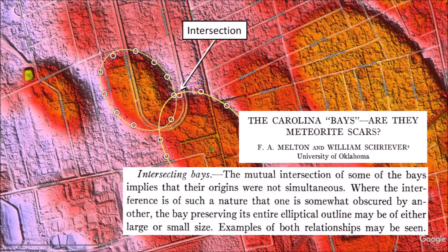Their paper was titled 'The Carolina Bays — Are They Meteorite Scars?' They wrote this about intersecting bays: 'The mutual intersection of some of the bays implies that their origins were not simultaneous. Where the interference is of such a nature that one is somewhat obscured by another, the bay preserving its entire elliptical outline may be of either large or small size. Examples of both relationships may be seen.'